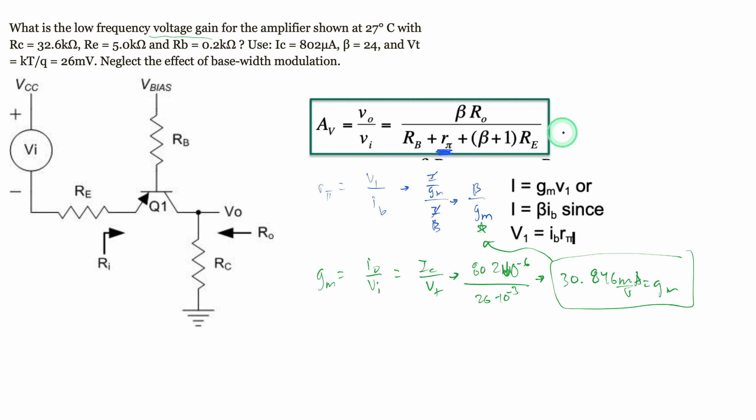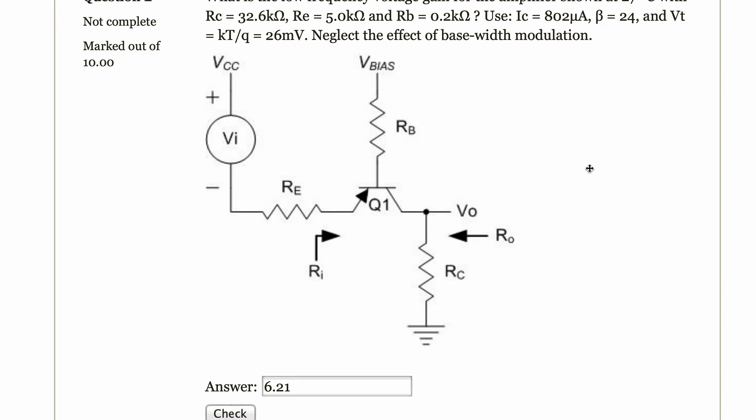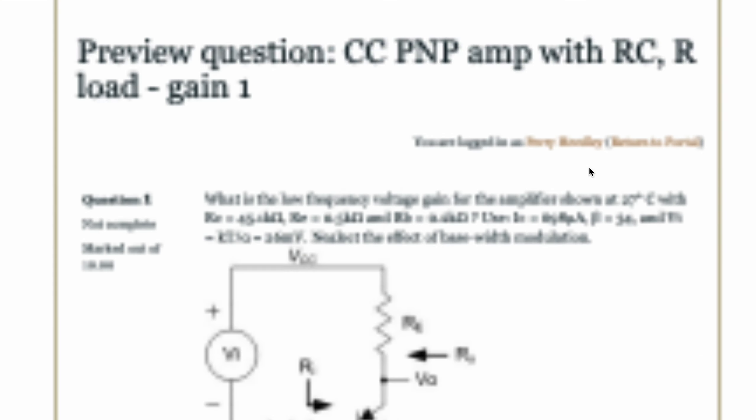After we plug back in all of our values, we are going to get that our Av is equal to approximately 6.21. So +6.21 is our answer.